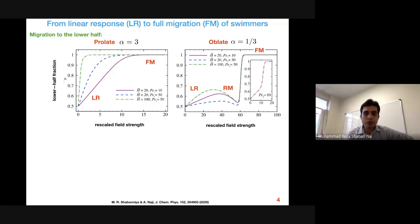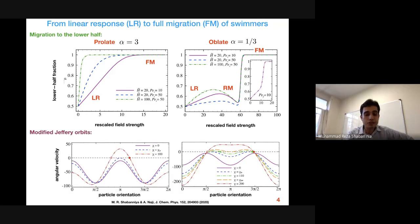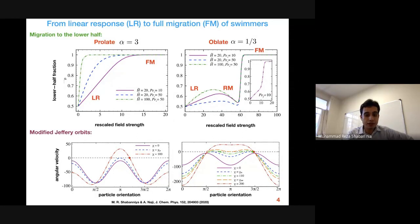This sudden migration to the lower half will be important, as we will explain in the next slides. To explain this, we consider field-modified Jeffrey orbits. The classic Jeffrey orbits in zero magnetic field correspond to the purple curve. As we increase the magnetic field beyond a certain threshold, a single stable fixed point for prolate particles develops, meaning the orientation of the particles is stable in that direction.